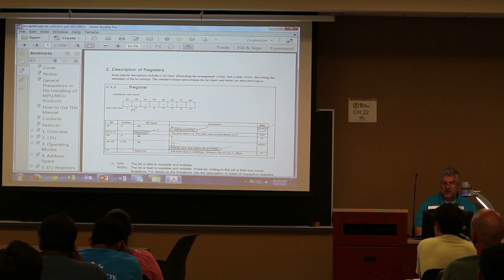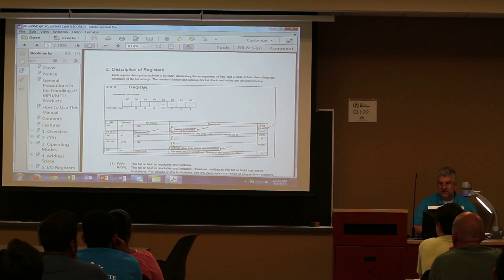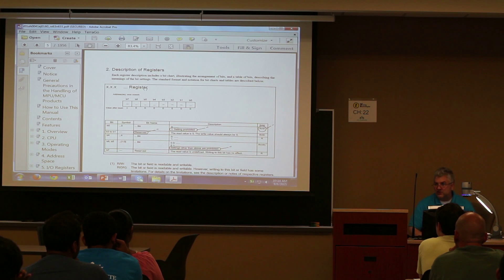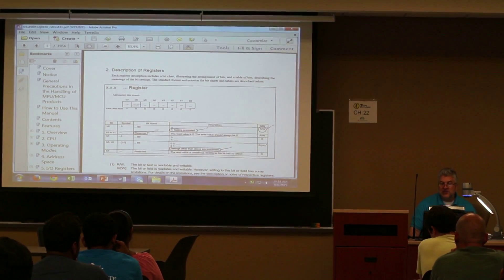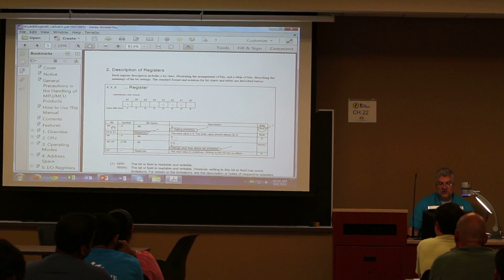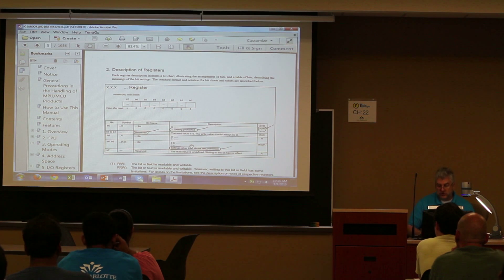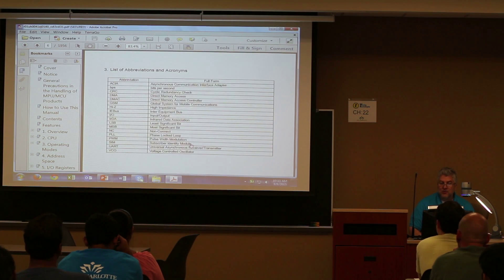All throughout the manual it will tell you about particular registers. For example, the output data register — some registers may have a distinguishing aspect where bit 0 might do something, bit 4 might have something, and bits 5 and 6 may be grouped together and do different things. There are all sorts of information associated with each of these. We'll look at that in a lot more detail later on.